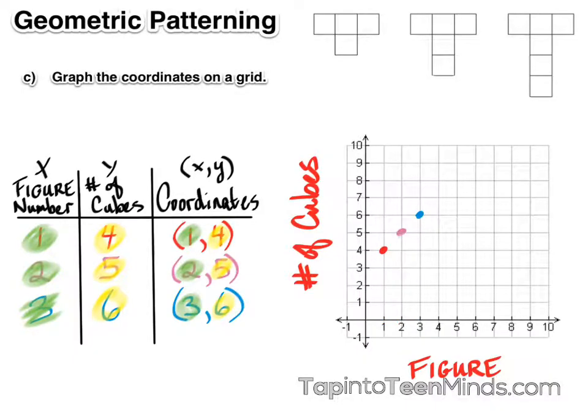And if you take a look, you can see that we have a pattern in the table. We notice in the table that we're actually increasing by one each time. And our figure number is increasing by one each time. If we look at our values in the table, we go one to the right, one up, one to the right, one up. So there's those values increasing by one each time.